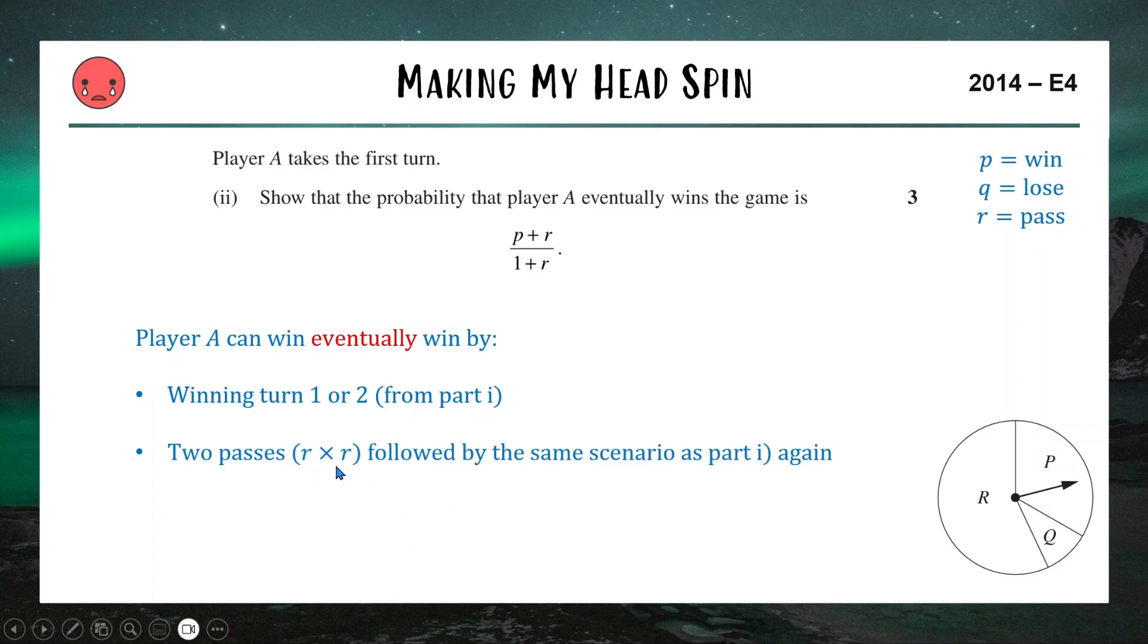So setting up the possibilities of me winning the game, either it's going to be me winning on the first or second goes, which we already calculated in part I, or it could be me passing it to you and then you passing it back and then basically part I happening again. So either two passes, so passing to you, passing back to me and then repeating the same scenario from part I. So let's try and turn this into some form of equation. We have here is me winning turn one or two already calculated. Here is that happening again after two passes, R times R. Or technically it could pass four times. I could go past you, pass back, pass back, pass back. We could be doing this multiplied by R squared once again and this could go on and on and on and on forever. And that's why we have an infinite series right here.